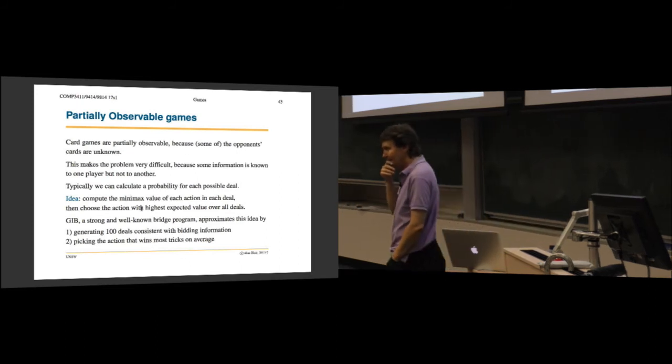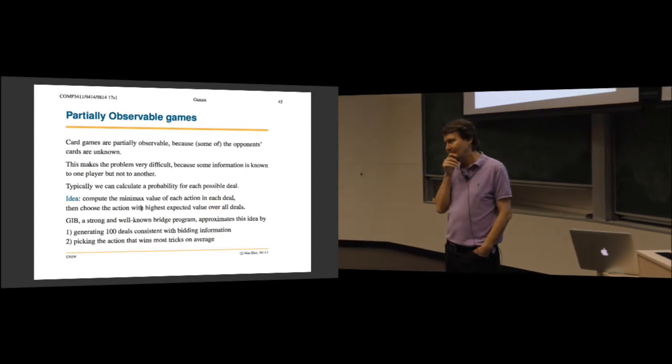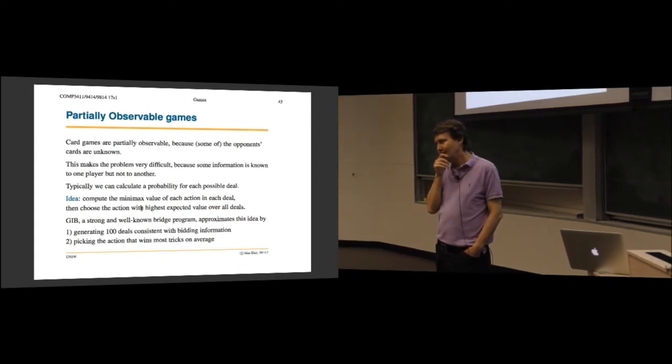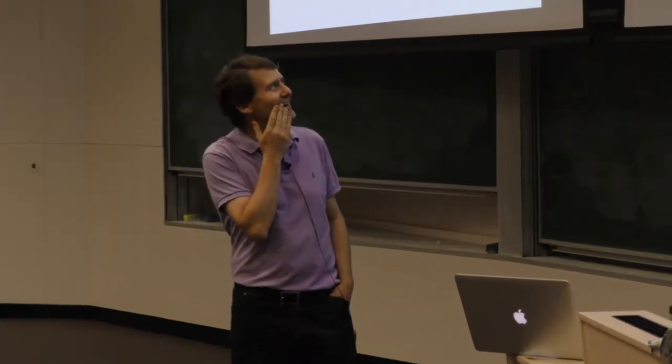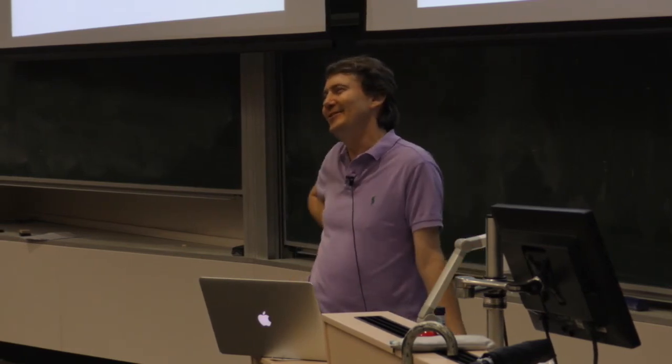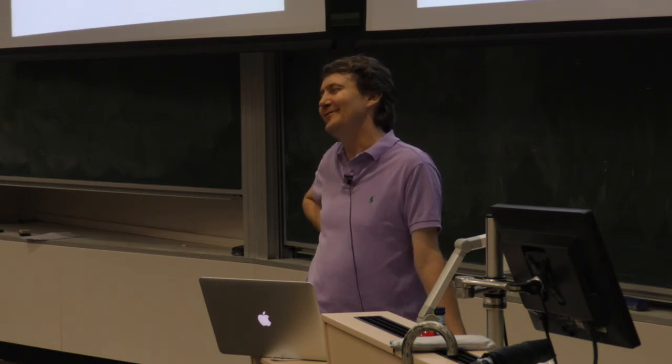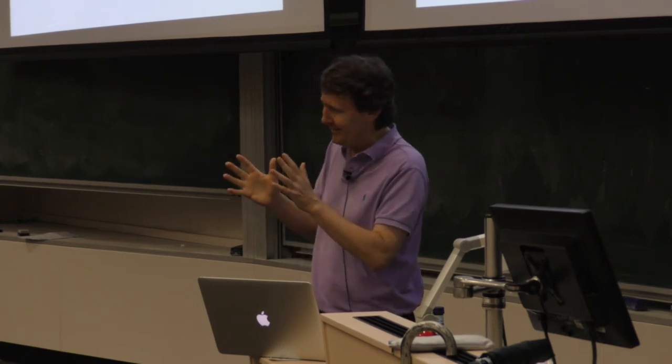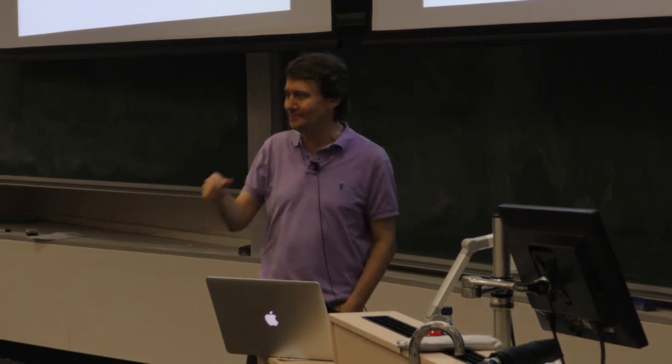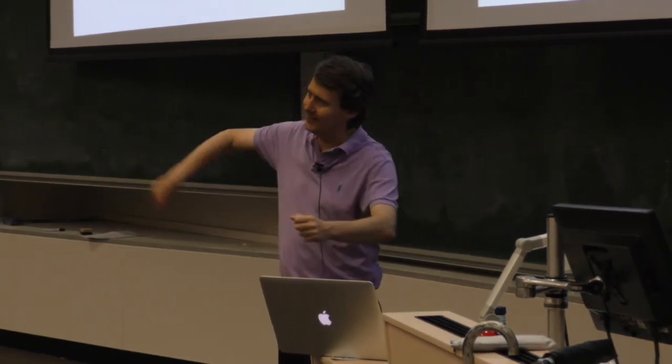Just out of curiosity, for this partially observable game like poker, have they ever tried to use machine learning to understand the opponent's face and whether they're bluffing? Very good question. The question was, have they tried to use machine learning on the opponent's face to tell whether they're bluffing? That would be a good idea. But the truth is, these serious poker players are really good at not showing any expression. They have their poker face. I'm digressing here, but I read a description of roulette. You spin the wheel and then the ball.